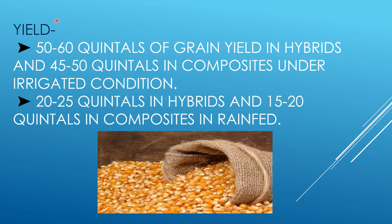Finally, the yield of the crop depends on whether it is grown under irrigated or rainfed conditions. Under irrigated conditions, hybrids yield 50 to 60 quintals per hectare and composites yield 45 to 50 quintals. Under rainfed conditions, hybrids yield 20 to 25 quintals and composites yield 15 to 20 quintals. This completes the maize cultivation tutorial.